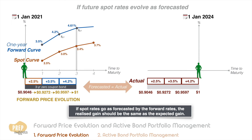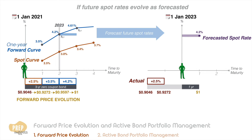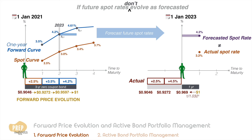Now let's go back to 2023. Let's say instead of a 4.2 percent spot rate, the rate falls to 3.2 percent. Discount one dollar by 3.2 percent for a year and we get 0.969. In this case, your zero coupon bond rises to this price instead of 0.9597 as forecasted by the forward rates in 2021. Your return for the year is correspondingly higher at 4.5 percent instead of 3.5 percent.